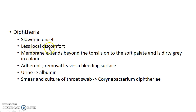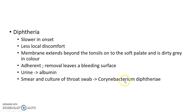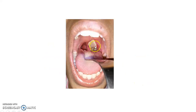Diphtheria has a slower onset and causes less local discomfort in comparison with acute membranous tonsillitis. The membrane extends beyond the tonsils onto the soft palate and is dirty gray in color. The membrane is adherent and its removal leaves a bleeding surface. Urine examination reveals albumin. Smear and culture of throat swab reveals Corynebacterium diphtheriae. This is how a patient with diphtheria presents to you.